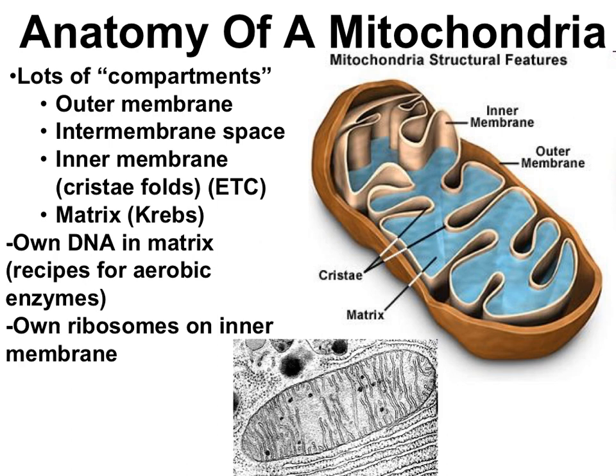The mitochondrial matrix is the site of the reactions of the link reactions and the Krebs cycle. The inner mitochondrial membrane is very highly folded, and these folds have special names called the cristae. Enzymes and proteins that help with the electron transport chain are embedded in the inner mitochondrial membrane, so having these folds creates a lot more surface area where more proteins can be inserted, increasing the efficiency of mitochondria in aerobic cell respiration.